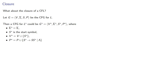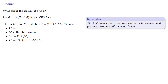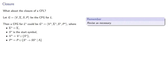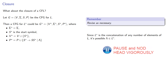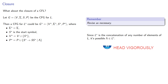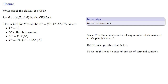You could revise the grammar as necessary, and there is one small problem. Since L* is a concatenation of any number of elements of L, it's possible that the empty string is in the star closure, because we might take no elements at all. But it's also possible that the empty string is not in the original language. So we may need to expand our set of terminal symbols to include the empty string.